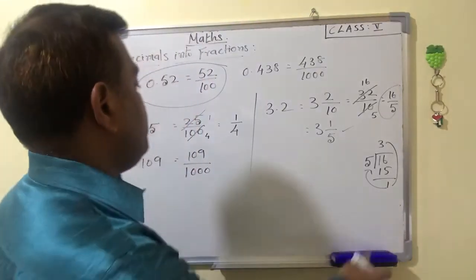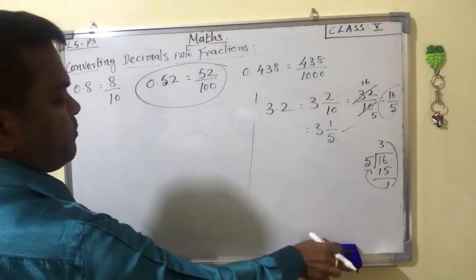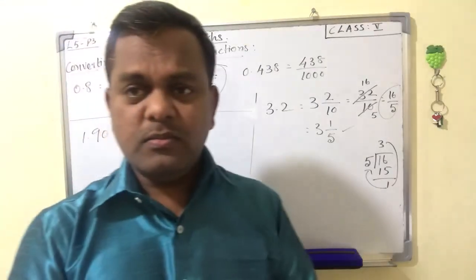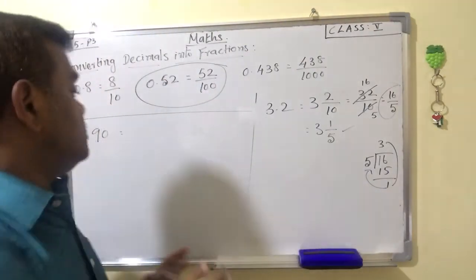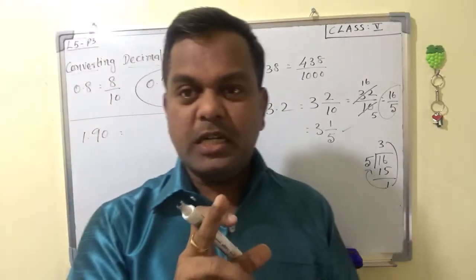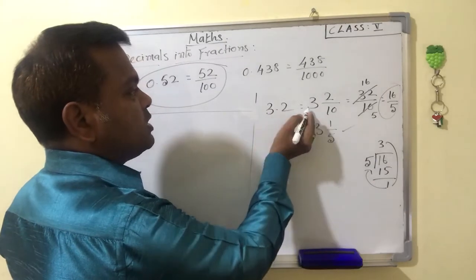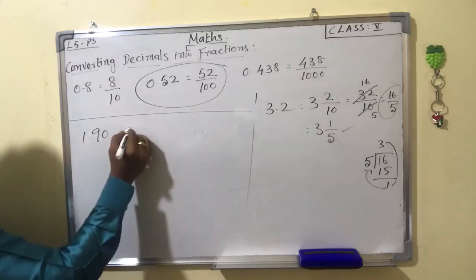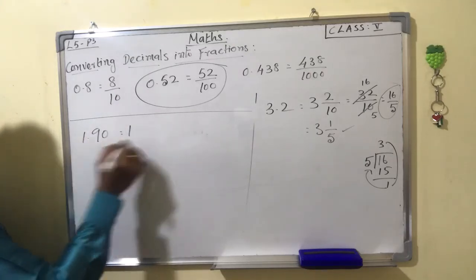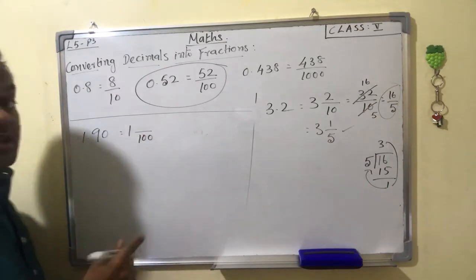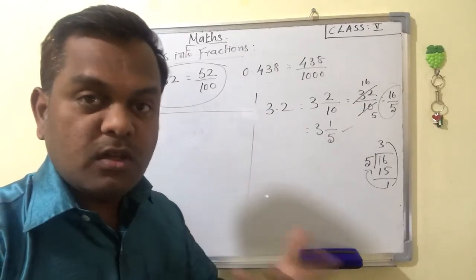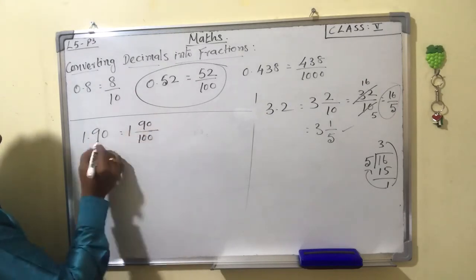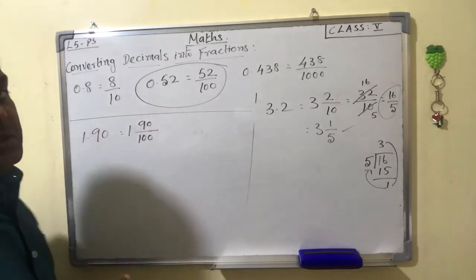One more question: 1.90. 1 is your whole number, so no need to do anything — it will be a mixed number. After the point there are 2 places, so the denominator is 100. The numerator is 90. So we get 1 and 90 by 100. Convert to improper fraction: 1 times 100 is 100, plus 90 equals 190. So 190 by 100.